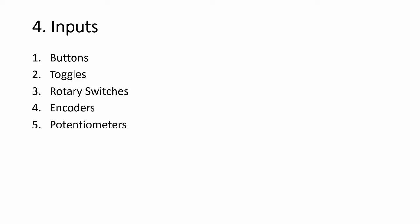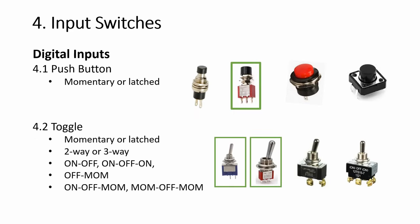For inputs you have buttons, toggles, rotary switches, encoders, and potentiometers. 90 to 95% of what you put on the panel are going to be some sort of input switch — not just buttons, but almost everything is considered a kind of switch. Occasionally you may have some output but most of the time the stuff we put on panels are inputs.